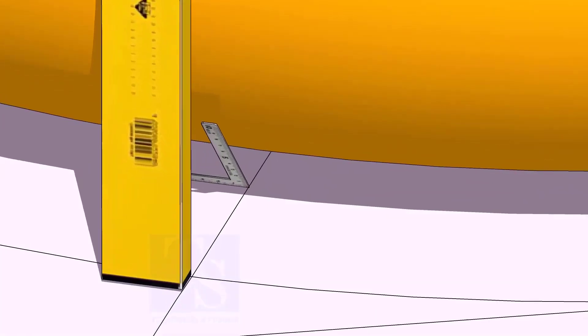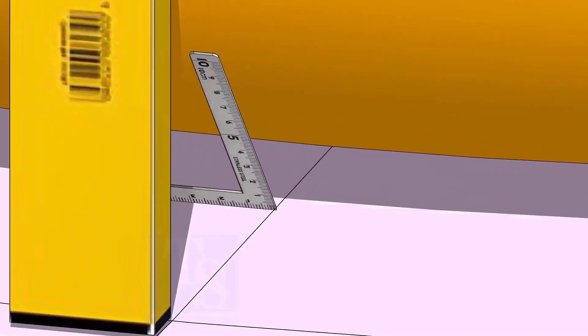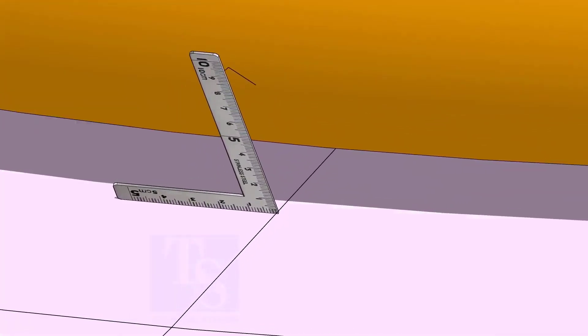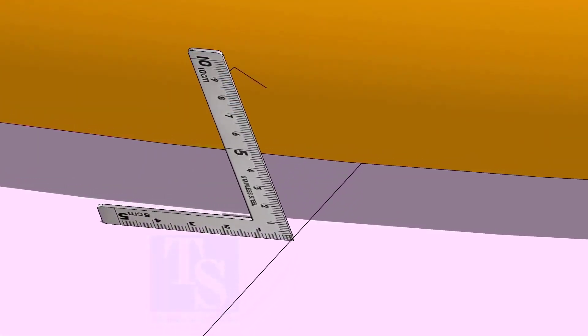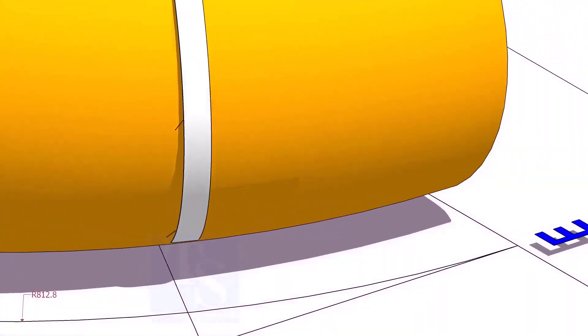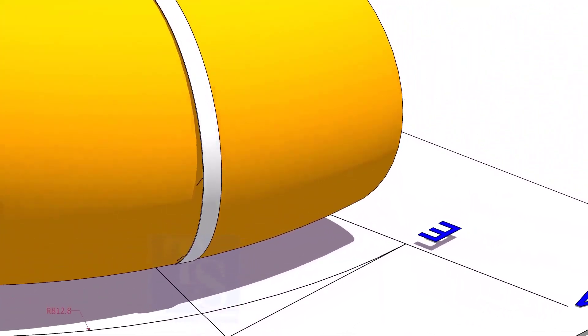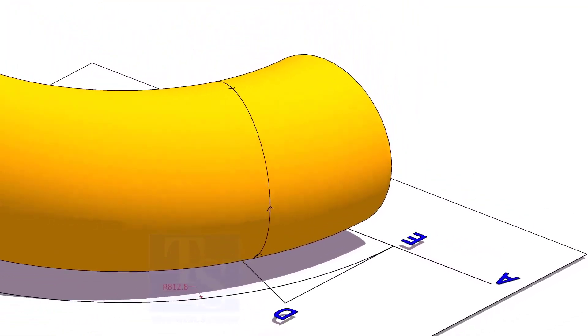At the bottom side, use a small right angle and transfer the line to the elbow on both sides. Use a bend scale and connect the marks to form a circle around the elbow.